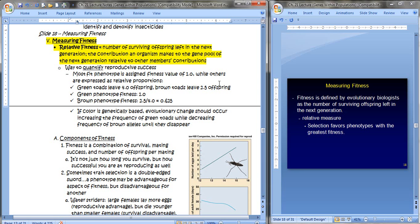Now, remember that natural selection acts directly on the phenotype, but indirectly on the genotype, right? So the most fit phenotype would be assigned a fitness value of a one, while the others would be expressed as relative proportions of that one. For example, green toads leave four offspring, but brown toads leave two and a half offspring. Who would you rather be? Probably the green toad. So the green phenotype fitness would be 1.0. And then comparatively, in order to figure out the brown phenotype fitness, you simply take a proportion of that. Two and a half divided by four gives you 0.625. Therefore, the green phenotype has a greater fitness level than the brown phenotype. So if color is genetically based, evolutionary change should occur, increasing the frequency of the green toads while decreasing the frequency of the brown alleles until they totally disappear.